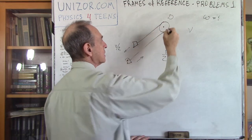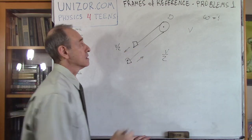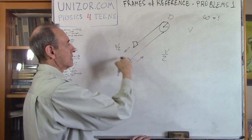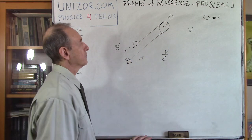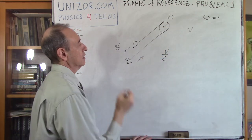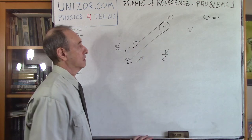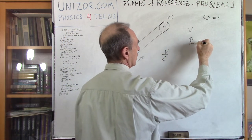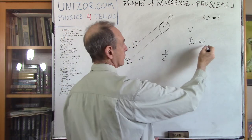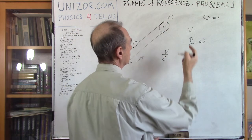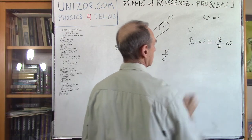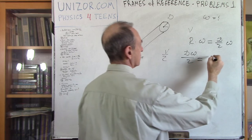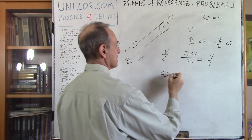The linear speed of each car (V over 2) equals the linear speed of the rim of the wheel, since the rope connecting the car moves at the same rate as the wheel's rim. Linear speed equals R times omega, where R is the wheel's radius. So (D/2) times omega equals V/2, from which omega equals V divided by D. That's the answer.